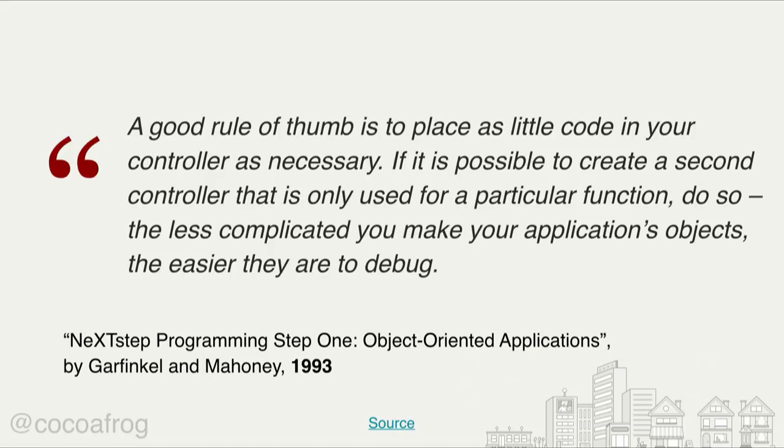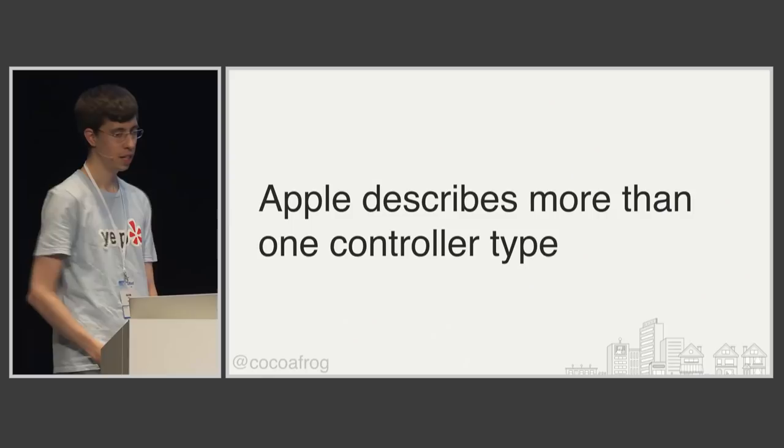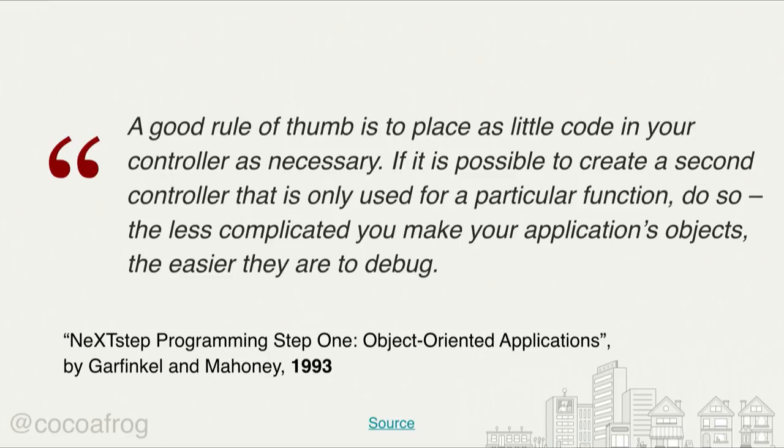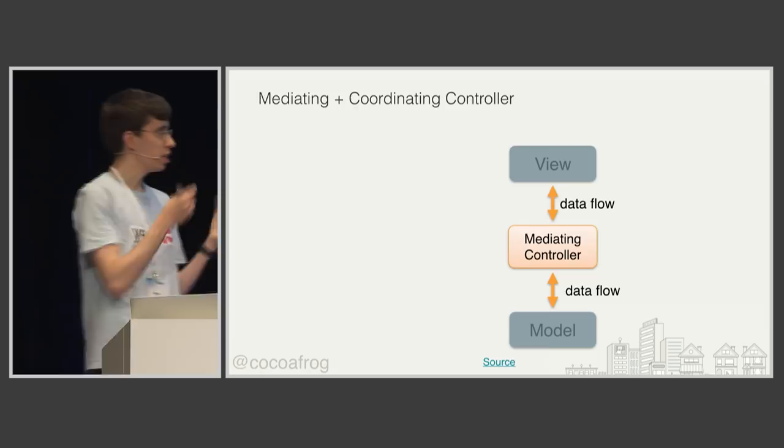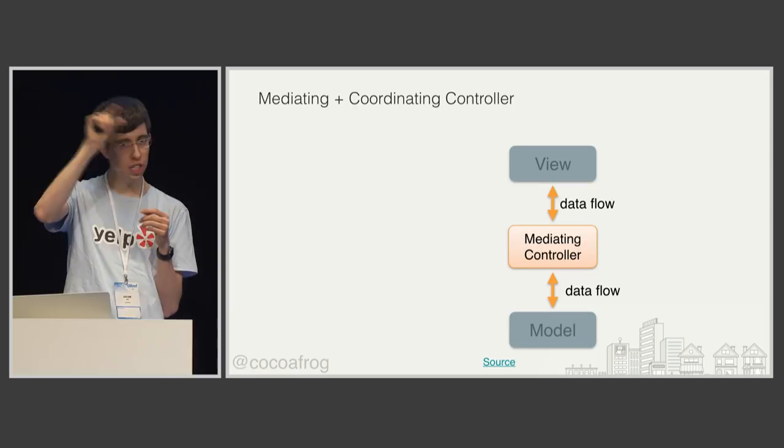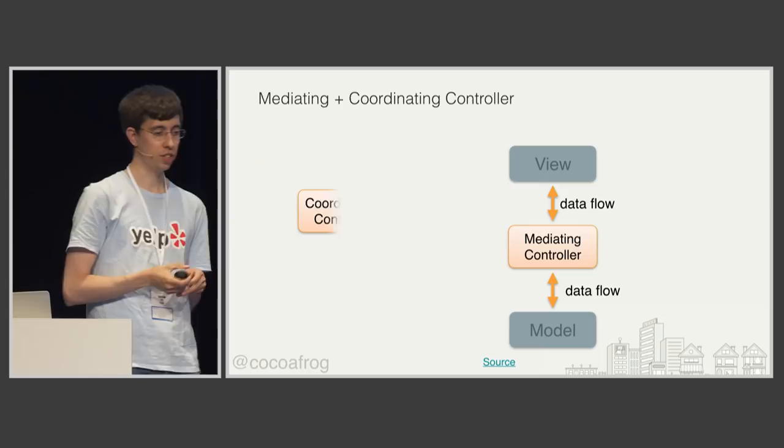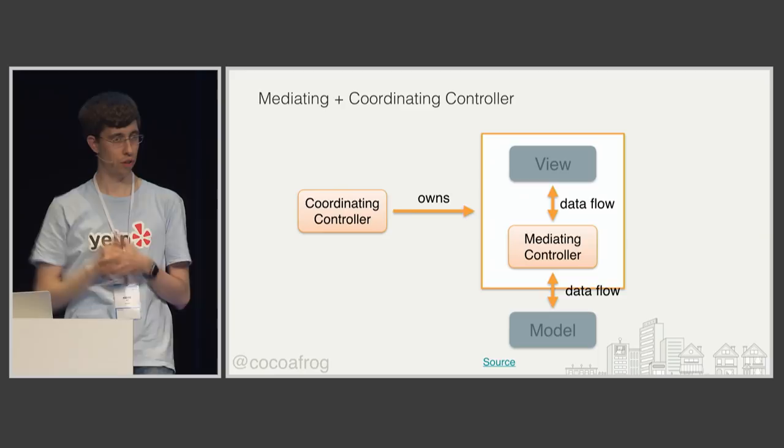Even Apple describes more than one controller type. We saw the diagram where you have the view, controller, and model. Apple calls the controller in the middle a mediating controller. In addition, Apple describes a coordinating controller that owns the view and the mediating controller and manages the two. This diagram is almost directly copied from Apple's Model-View-Controller guide — it has always been there.